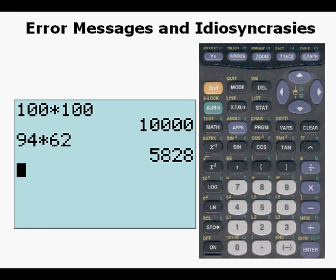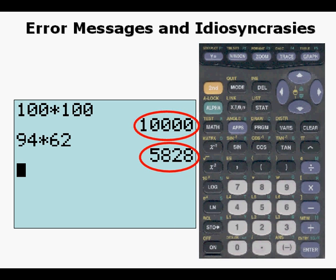But it only has 94 times 62, 5,828. So, there aren't enough pixels available to put all of them we've ordered, so we have total blackout.